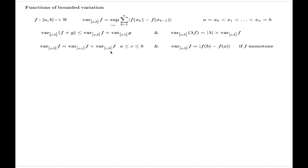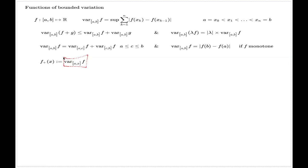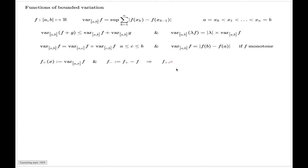With every function of bounded variation, you can associate two other non-decreasing functions. First, you define the function F+, which is the variation over the interval from A to x, where the dependence on x is captured by varying the right endpoint. For the second function F−, you take the difference. It is a relatively simple observation to conclude that these two functions will be non-decreasing.